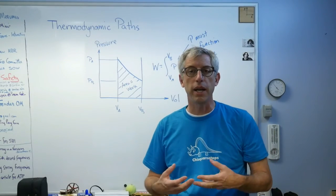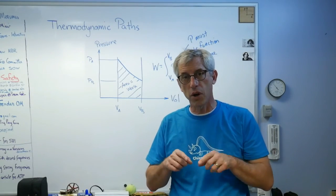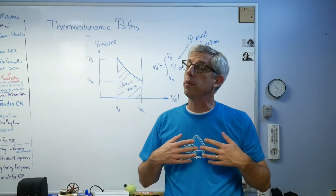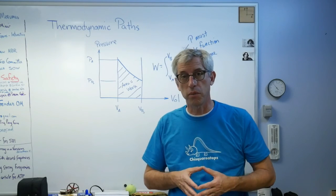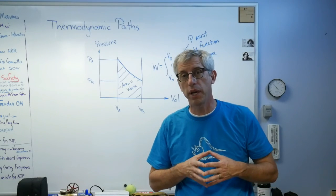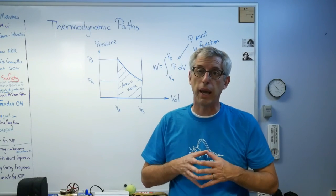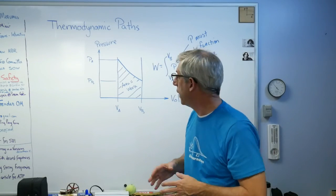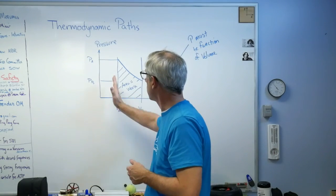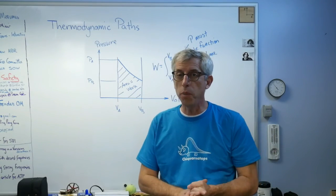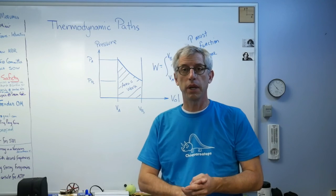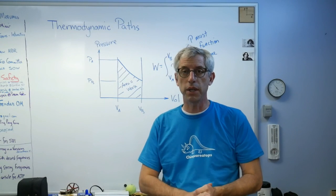And anytime you see 'iso' and then something behind it, it means something is staying the same. Isobaric: same pressure. Isothermal: same temperature. Isentropic: entropy doesn't change. And that just means a line is either horizontal or vertical on one of these paths. That's all it means. So hope this helps. I'll talk to you later and see you next time.